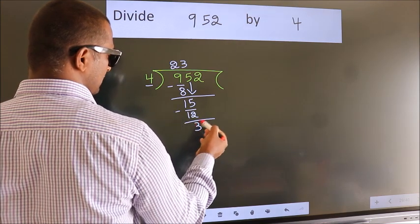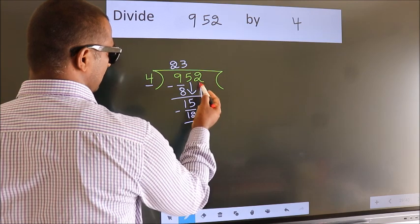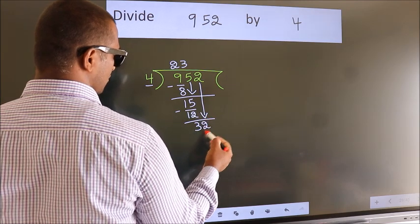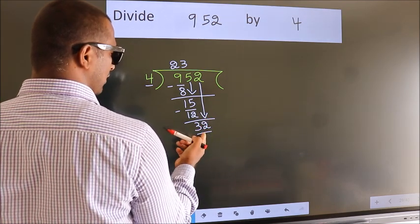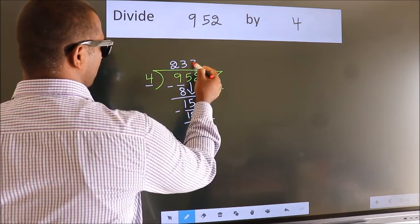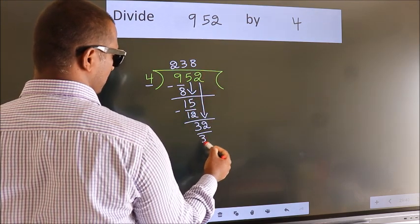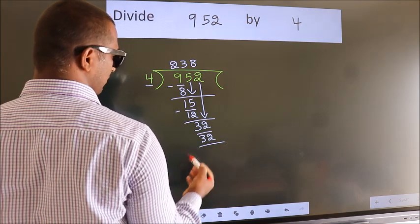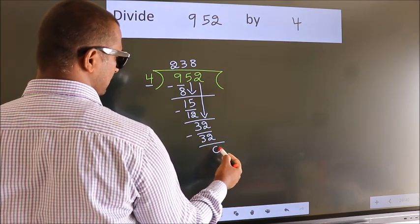After this, bring down the beside number. So 2 down. So 32. When do we get 32? In 4 table. 4 8s 32. Now we subtract. We get 0.